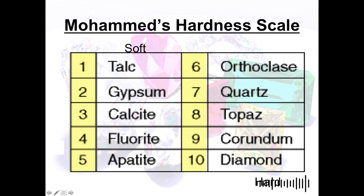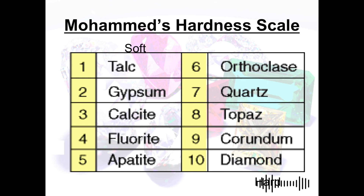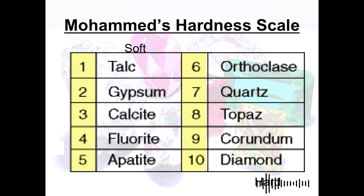The hardest mineral on the Mohs scale, rated 10, is diamond. Diamond is a rock-forming mineral used for jewelry, as well as for cutting, drilling, grinding, and abrading other materials, and also for decorative items.